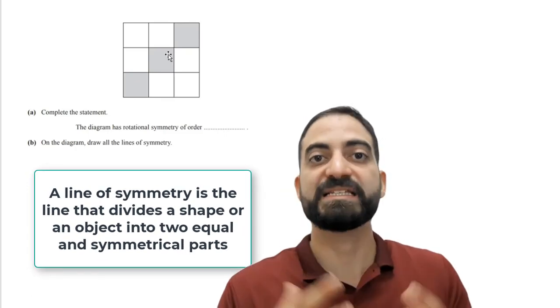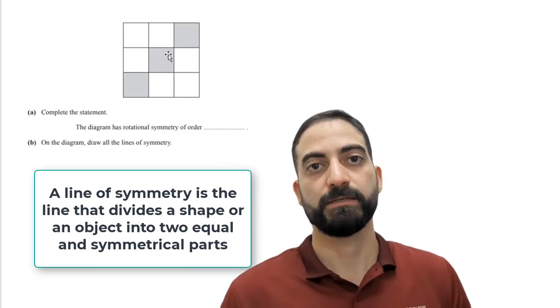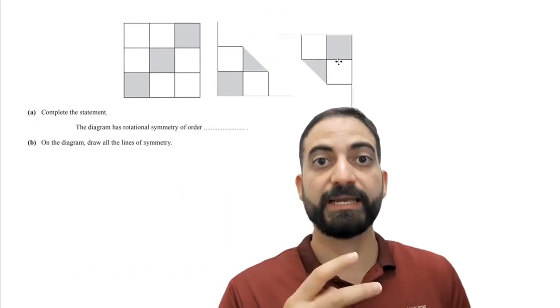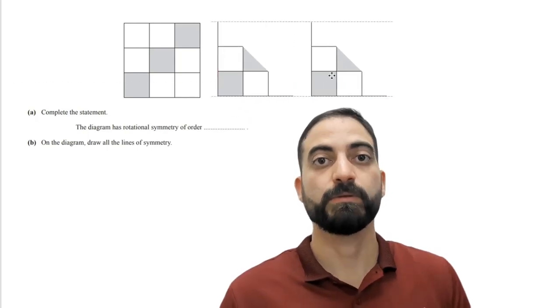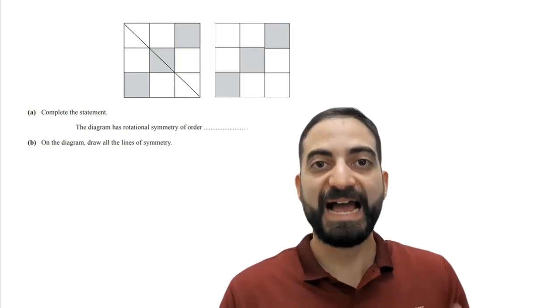As we can see, we have two equal and symmetrical parts, so this line is the line of symmetry.